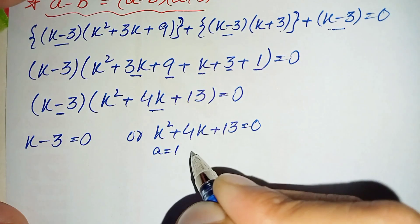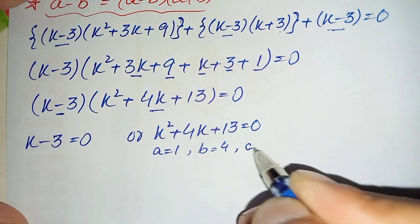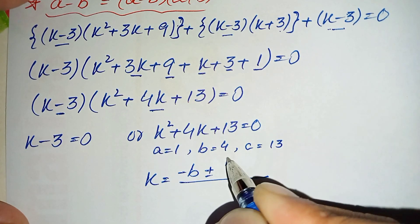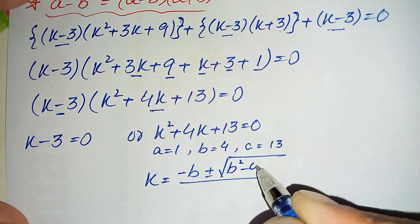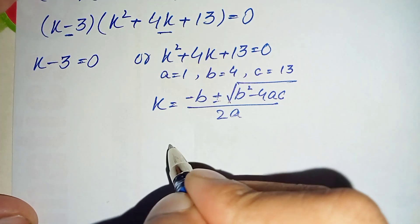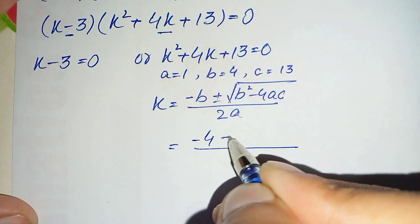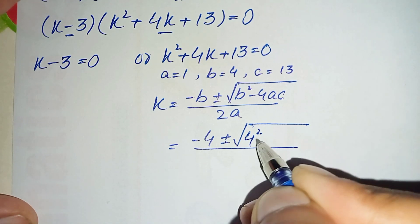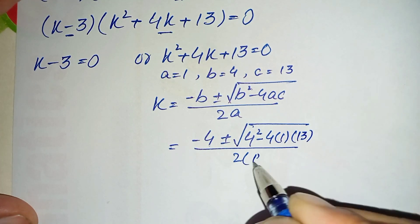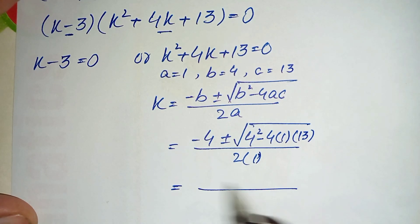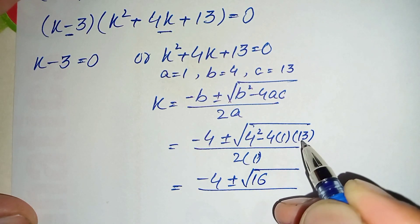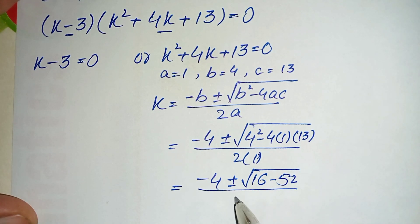For the equation k squared plus 4k plus 13 equals 0, the values are A equals 1, B equals 4, and C equals 13. Using the quadratic formula: k equals minus B plus or minus square root of (B squared minus 4AC) divided by 2A. Substituting: minus 4 plus or minus square root of (16 minus 4 times 1 times 13) divided by 2, which gives minus 4 plus or minus square root of (16 minus 52) divided by 2.